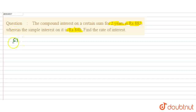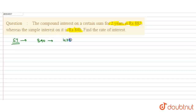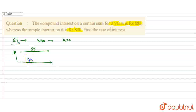Simple interest की बात क्या होती है? Simple interest हर साल सेम लगता है। तो अगर 840 दो साल के लिए है, तो एक साल के लिए 420 होगा। अगर कोई भी amount P है, उसके पास दो रास्ते हैं — या तो वो simple interest पे जाए, या फिर compound interest पे जाए। पहले साल के बाद, simple interest और compound interest सेम होगे — दोनों 420।